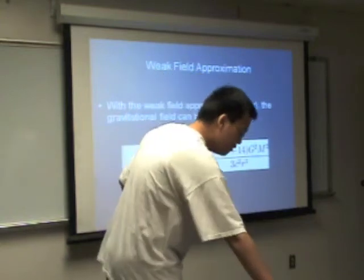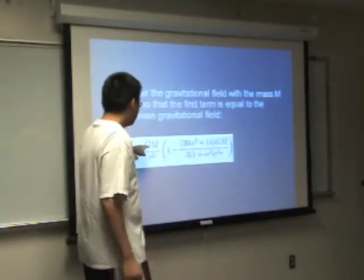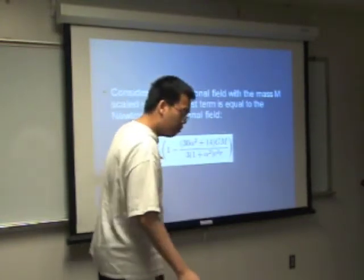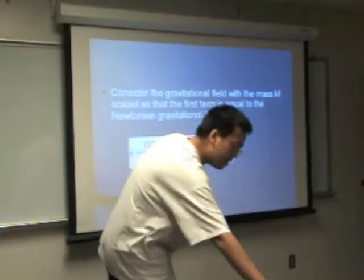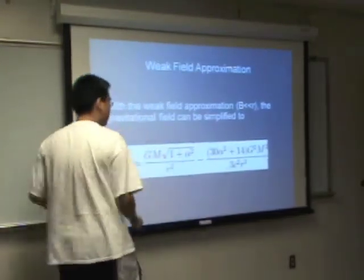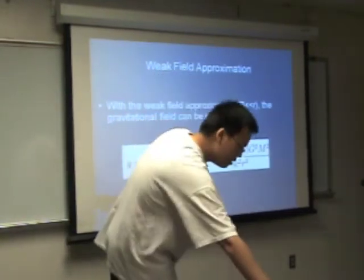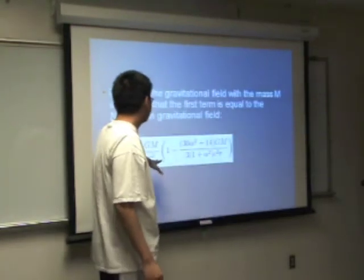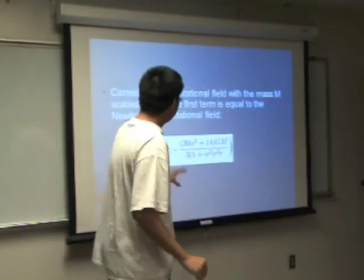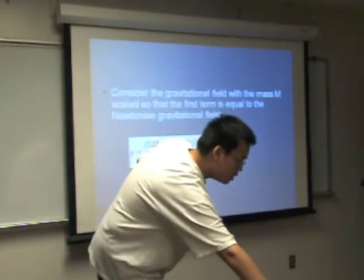And from that, we want to scale the mass so that the first term is the Newtonian gravitational field. So what we did was, we assumed that this whole thing is the scaled mass, the measurable mass. And that's how we got this equation. And this is all for weak fields, weak fields, no shielding or weak or no shielding.